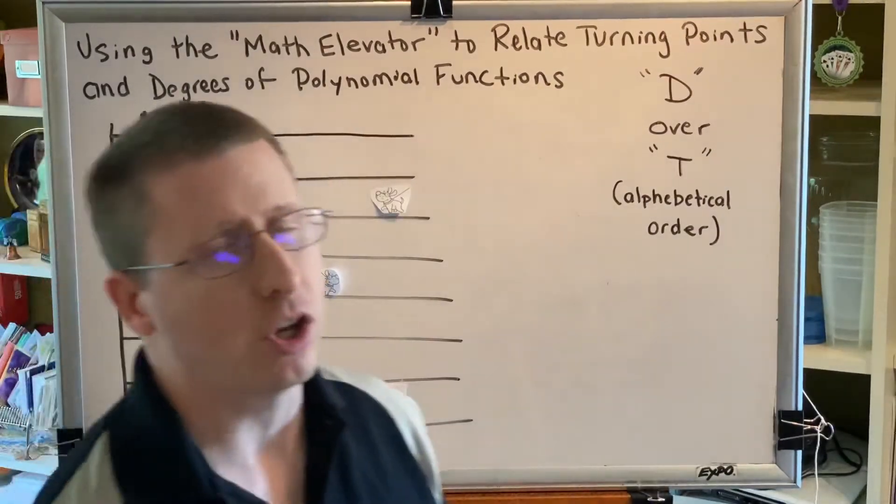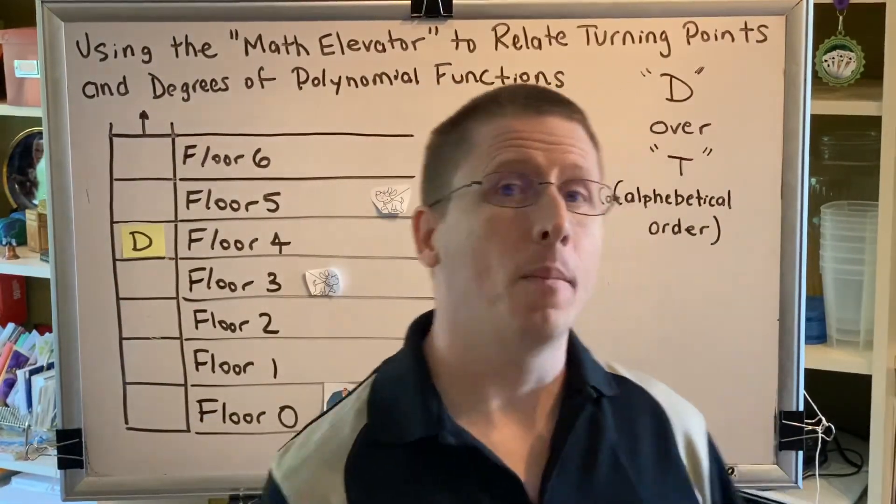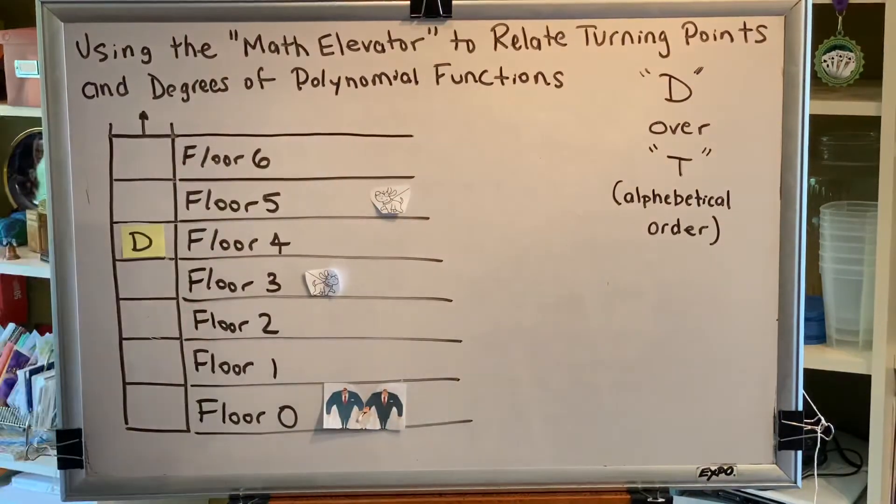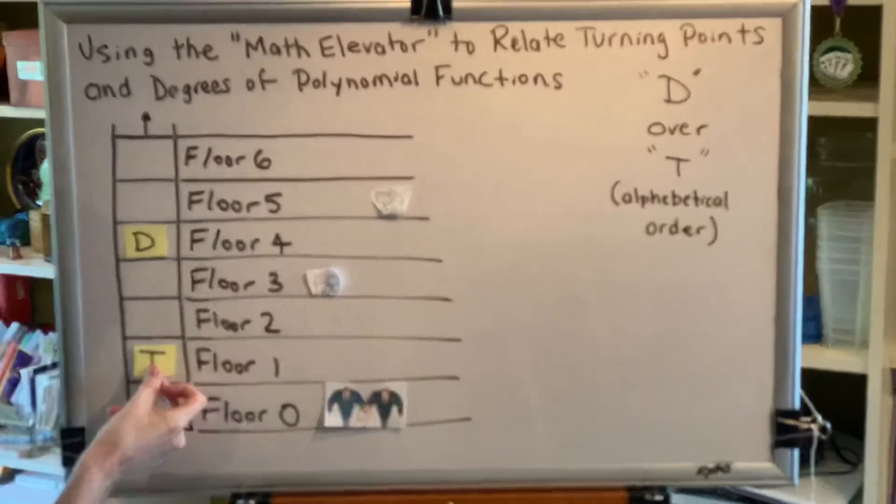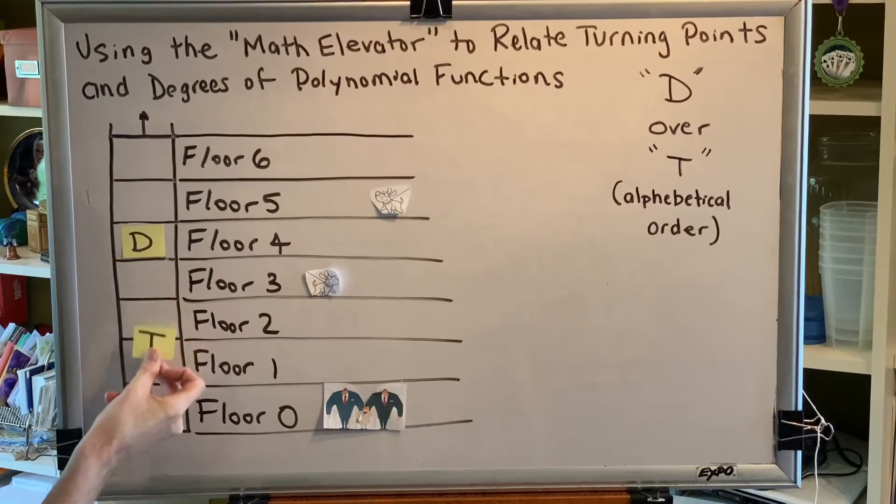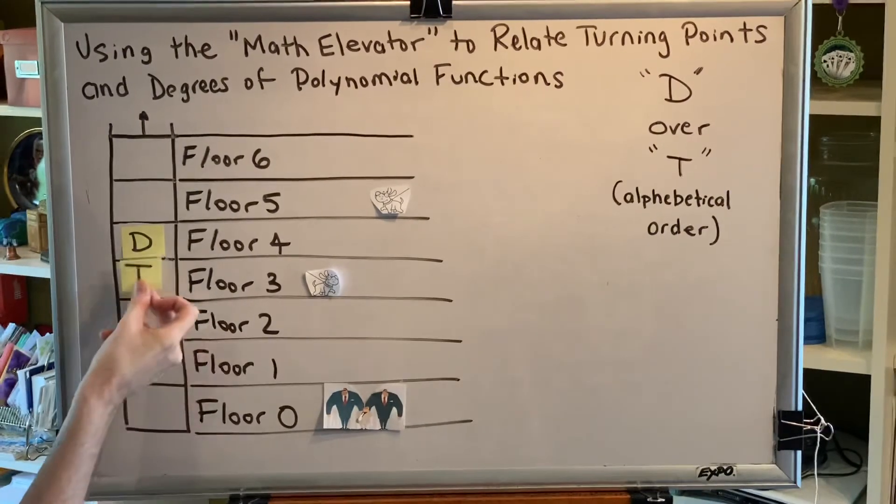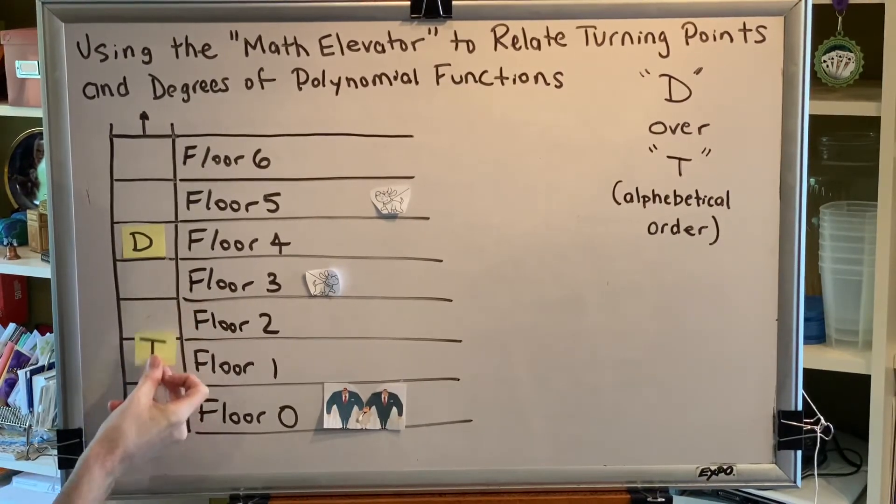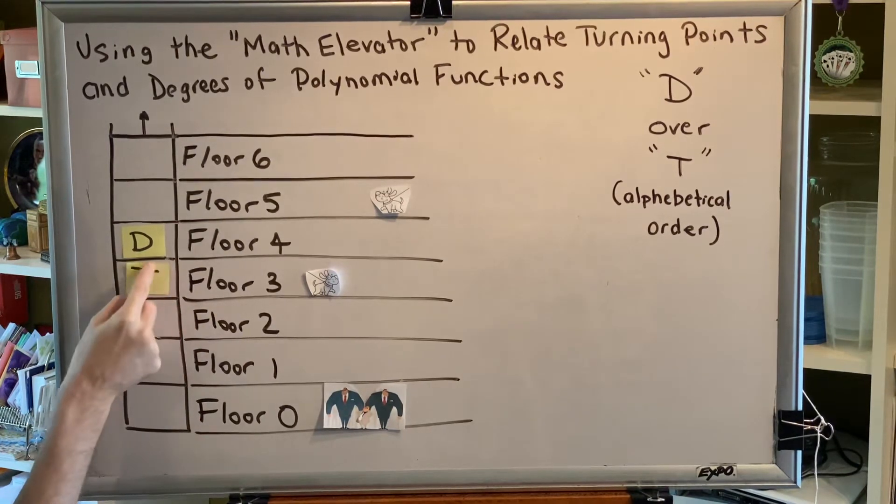If you were then asked the question, what is the maximum number of turning points that that particular function could have? You would say that the answer is three. The T car can be here at zero, one, two, or three, but the maximum that it could be would be here at three.